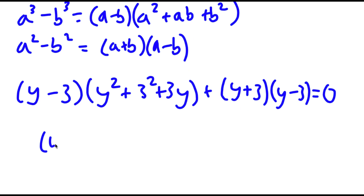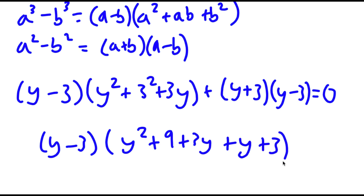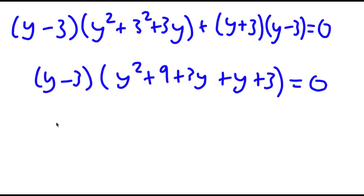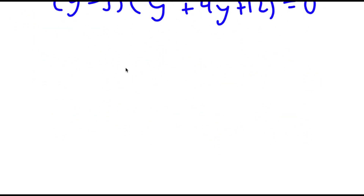Factoring out y minus 3, I get y minus 3 times y squared plus 9 plus 3y plus y plus 3, which equals 0. This simplifies into y minus 3 times y squared plus 4y plus 12 equals 0.